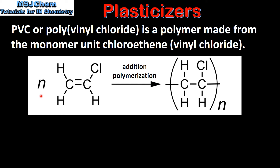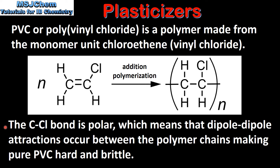Here we can see the formation of PVC from N number of chloroethene monomers to form N number of repeating units. The carbon-chlorine bond is polar, which means that dipole-dipole attractions occur between the polymer chains, making pure PVC hard and brittle.